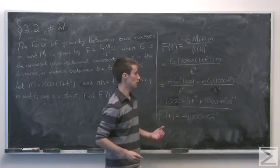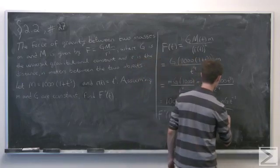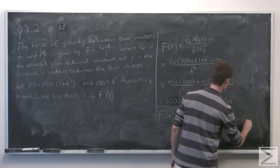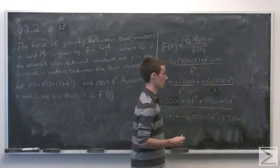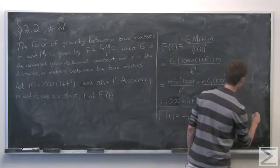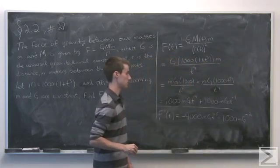And the second term will be minus 1 times 1,000, so minus 1,000 m G. And again, we lower the exponent by 1, so we're left with minus 2 in the exponent.